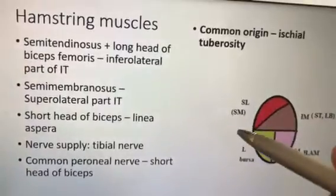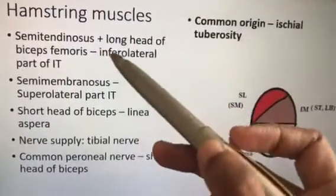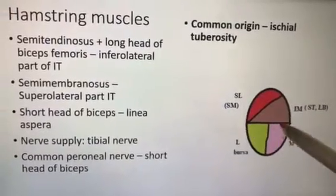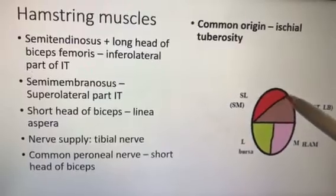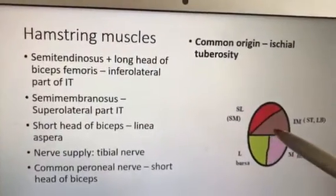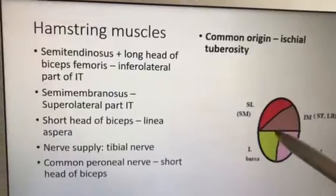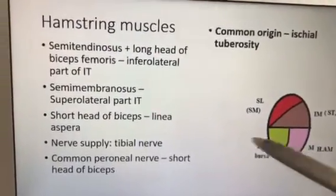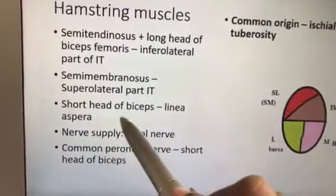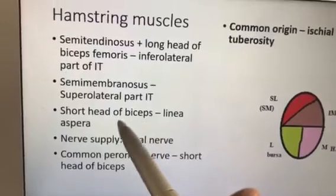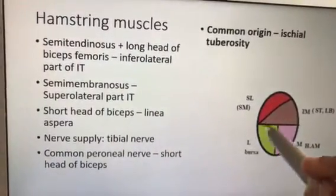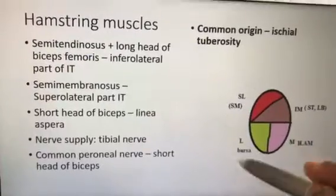Hamstring muscles were asked as an essay question in university exams. The ischial tuberosity is divided into upper and lower halves. The upper half is divided by an oblique line: the supralateral part gives origin to semimembranosus, and the inferomedial part to semitendinosus and long head of biceps. The lower part medially gives origin to the hamstring part of adductor magnus. Importantly, all hamstring muscles are supplied by the tibial component of the sciatic nerve, except the short head of biceps, which is supplied by the common peroneal nerve. The short head of biceps also arises from the linea aspera.